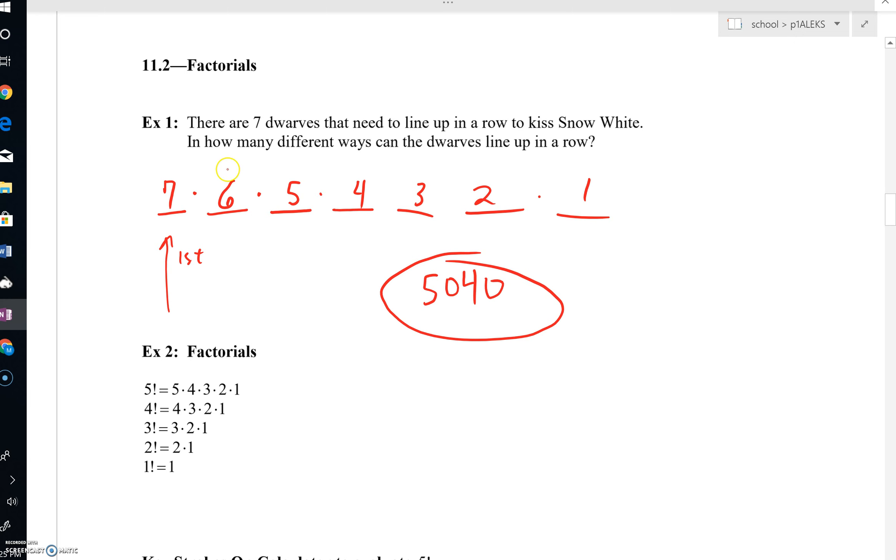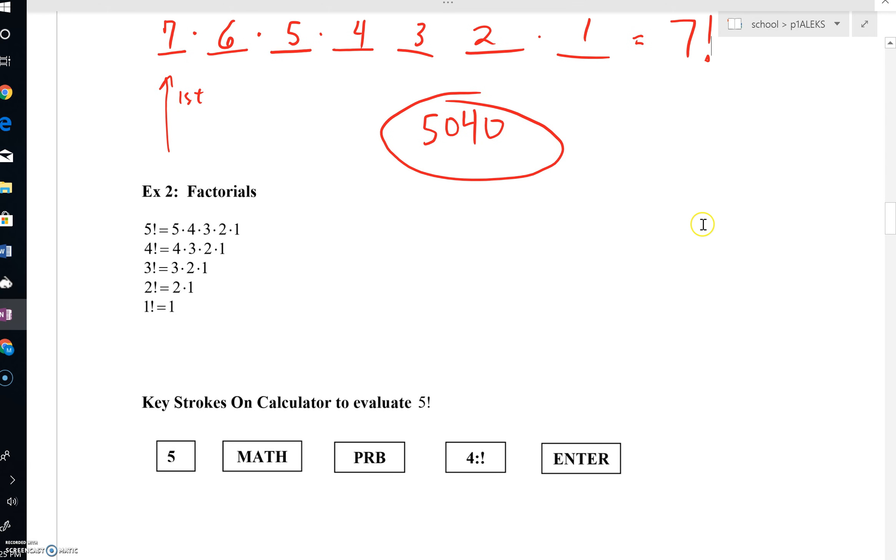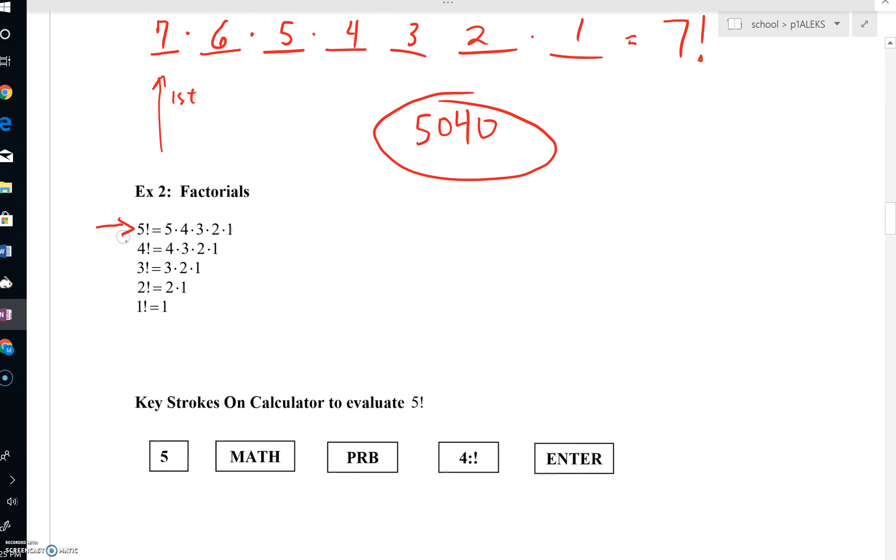What you're seeing here, though, when you multiply seven times the integer below it, continuing to subtract one to get to the next integer, this is known as a factorial. We can write that as seven with an exclamation point. So this five with the exclamation point, a five factorial, would be five times four times three times two times one. A four factorial, likewise, is four times three times two times one. You get the idea.